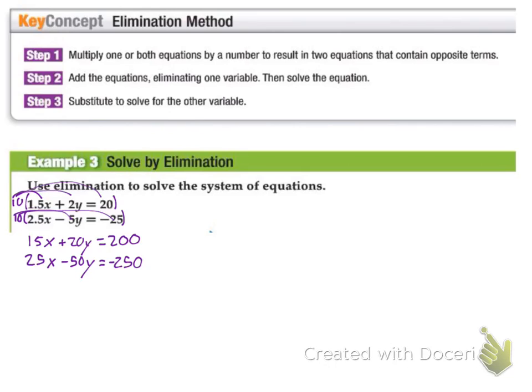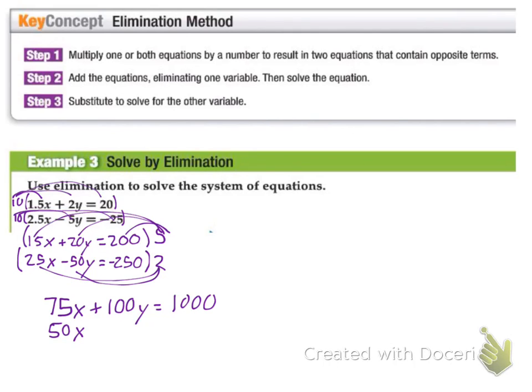Now, the question that you have to ask yourself is, so, what number does 20 and 50 both go into? Okay, both don't go into 50. It's a 100. So, 20 times what is 100? Five. So, I'm going to multiply the first equation by a 5. 50 times what is 100? Two. Five times 15? 75. Five times 20? We engineered that to happen. And five times 200? 1000. Two times 25? 50. Two times negative 50? Again, we tried to make that happen. And two times negative 250? Negative 500.